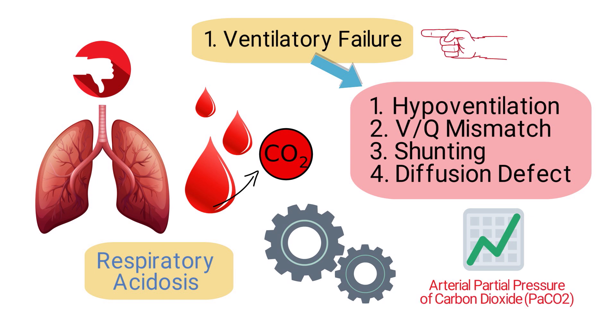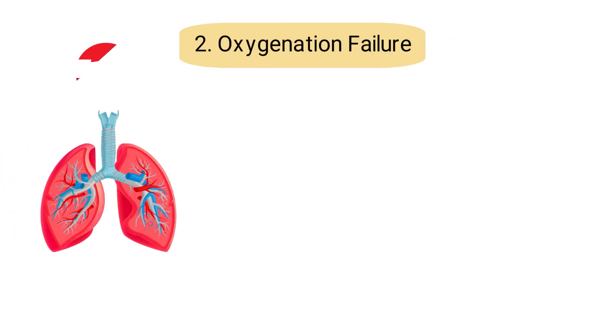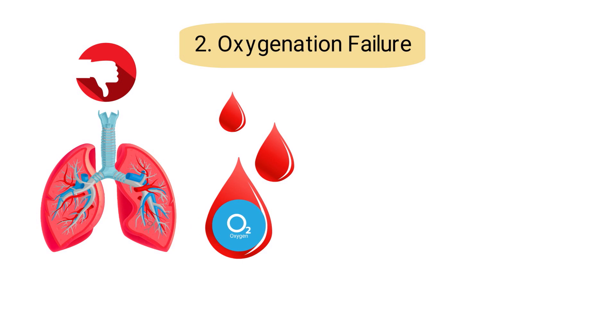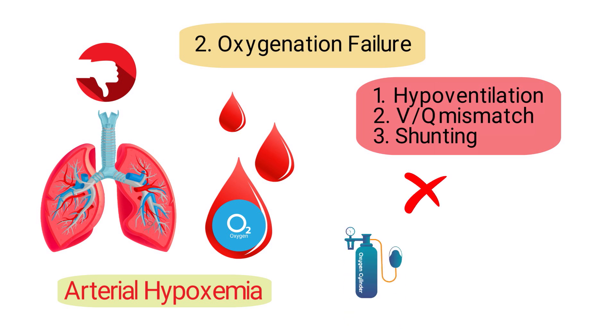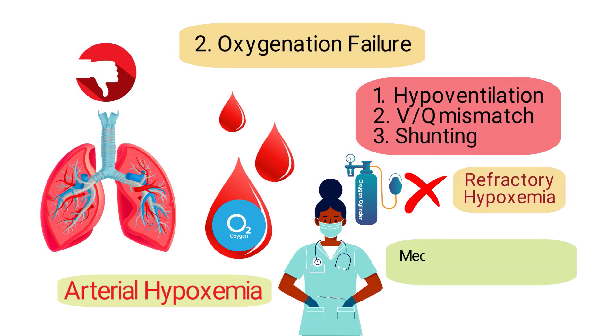Oxygenation failure is the inability of the lungs to adequately oxygenate the blood, which results in arterial hypoxemia. It is caused by hypoventilation, a V/Q mismatch, or shunting. However, this type of oxygenation failure does not respond to supplemental oxygen therapy, which is known as refractory hypoxemia. Therefore, it must be treated with mechanical ventilation and increased levels of PEEP.